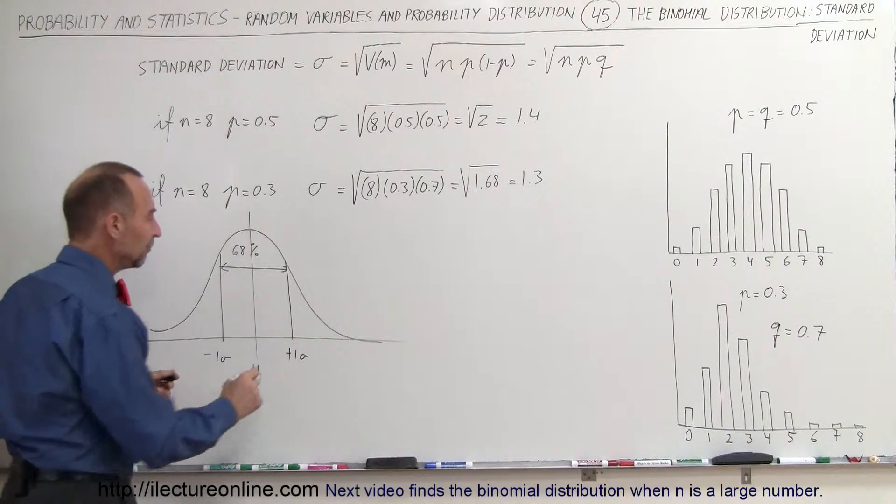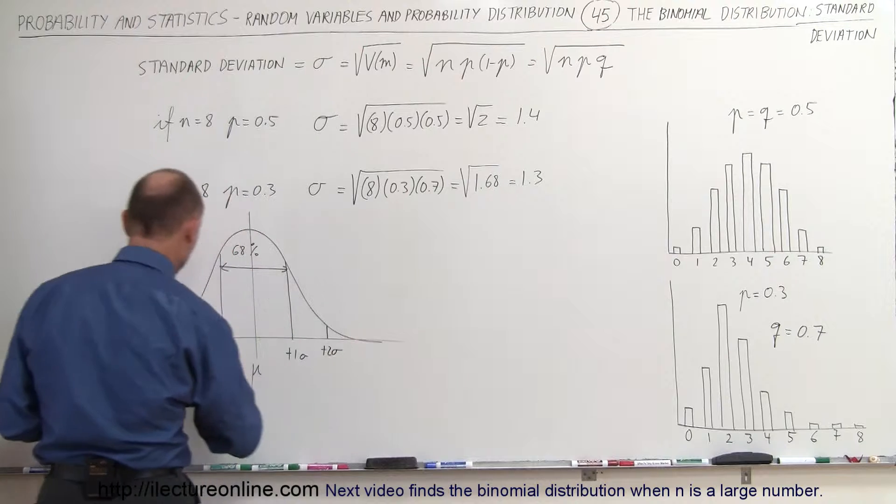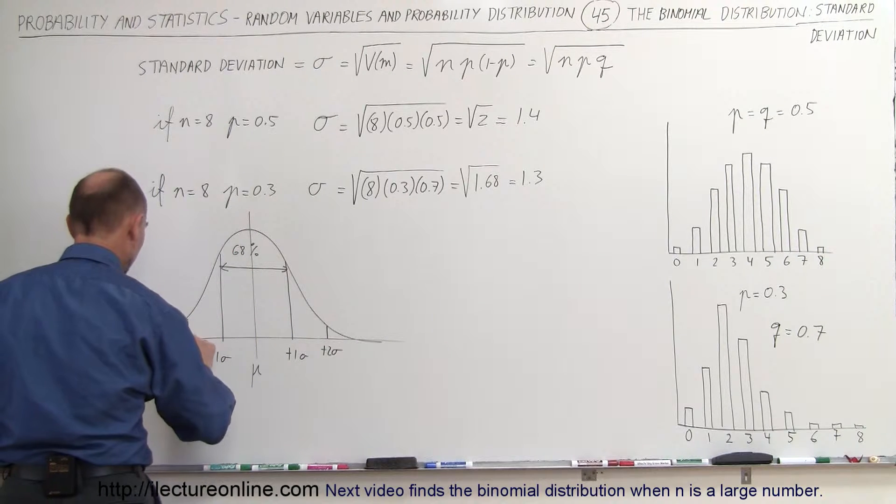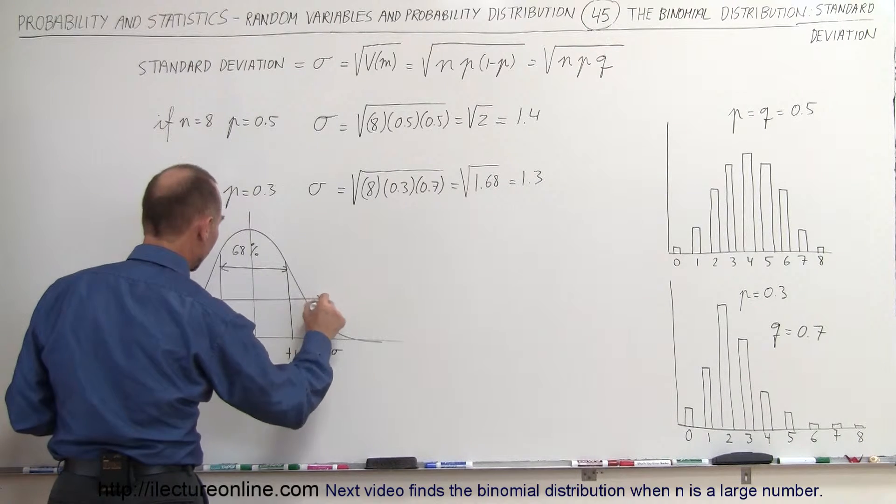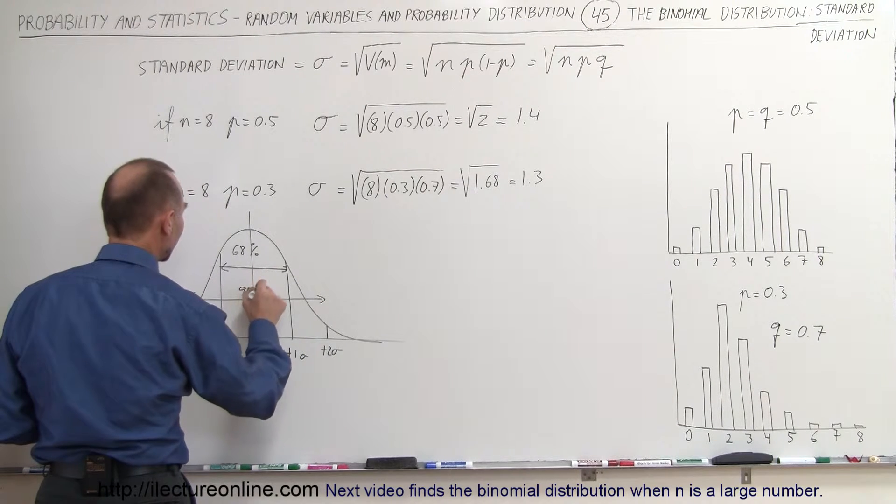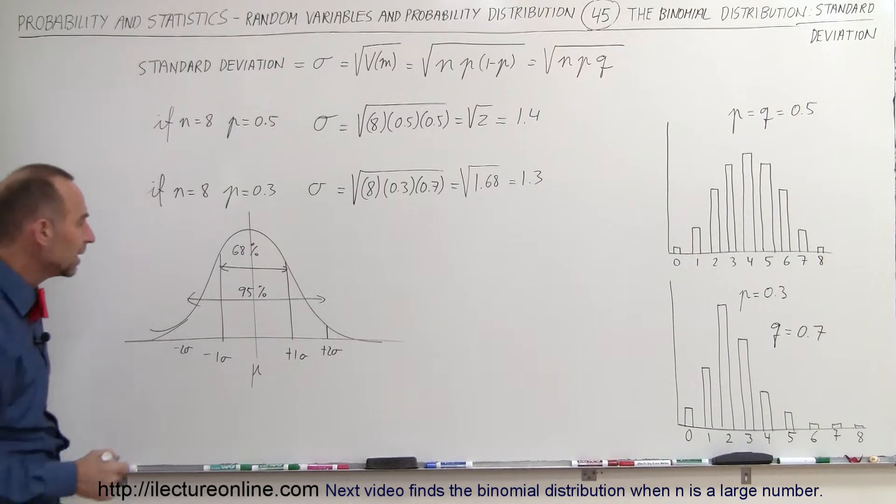If you go out plus or minus 2 sigma, so we have plus 2 sigma on the left side and minus 2 sigma on the right side, you can then say that approximately 95% of all values fall between plus or minus 2 sigma from the norm or from the expected value.